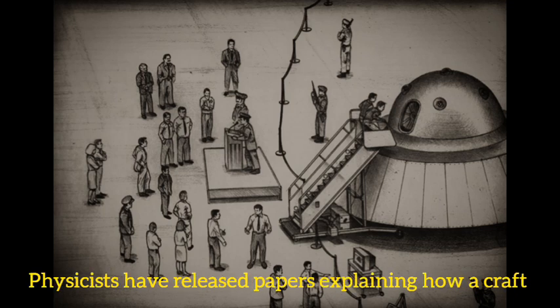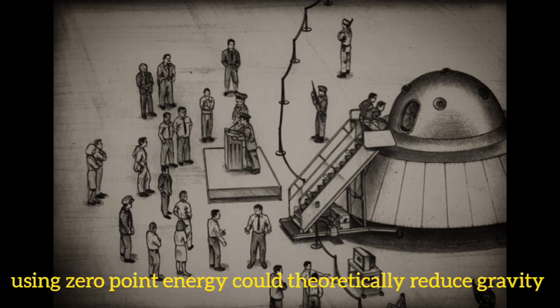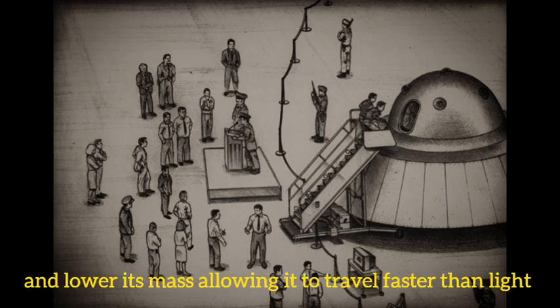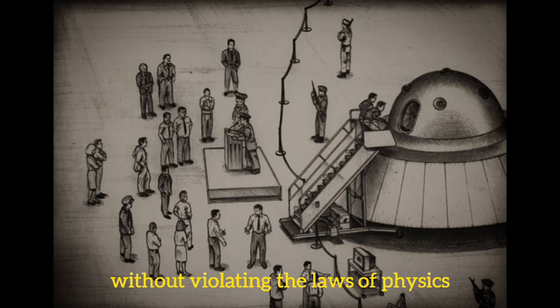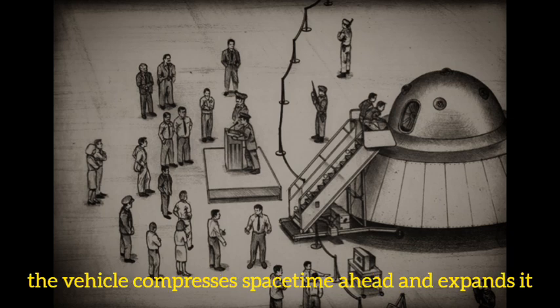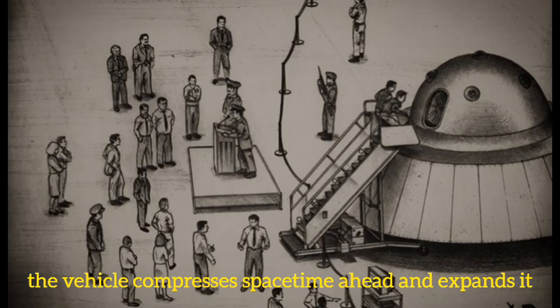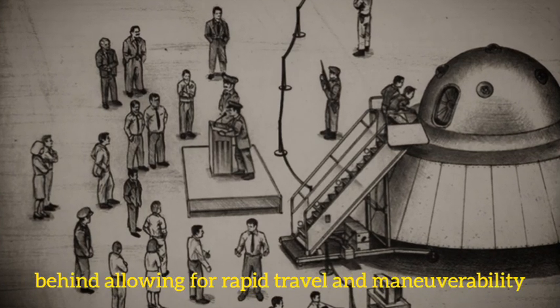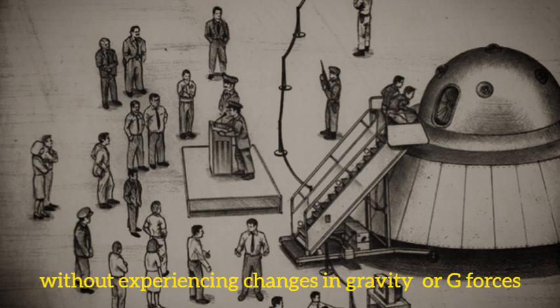Physicists have released papers explaining how a craft using zero-point energy could theoretically reduce gravity and lower its mass, allowing it to travel faster than light without violating the laws of physics. The vehicle compresses space-time ahead and expands it behind, allowing for rapid travel and maneuverability without experiencing changes in gravity or g-forces.